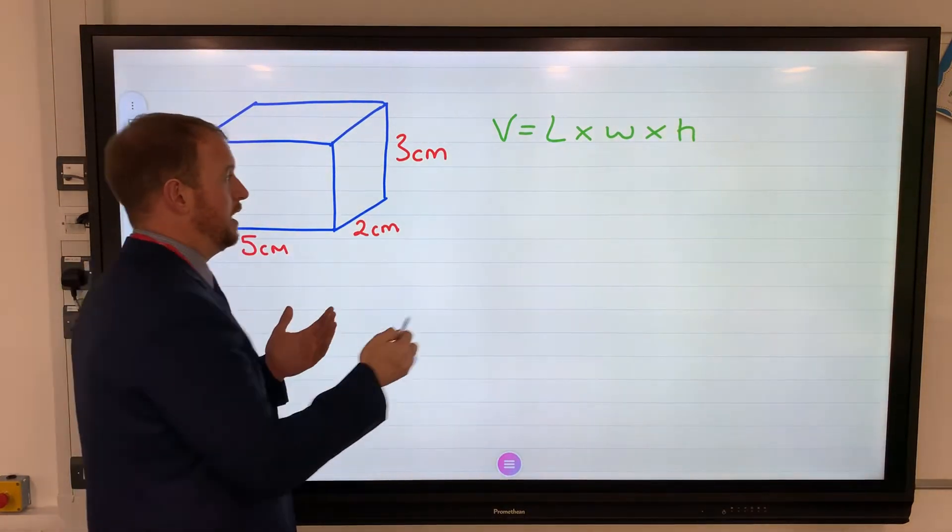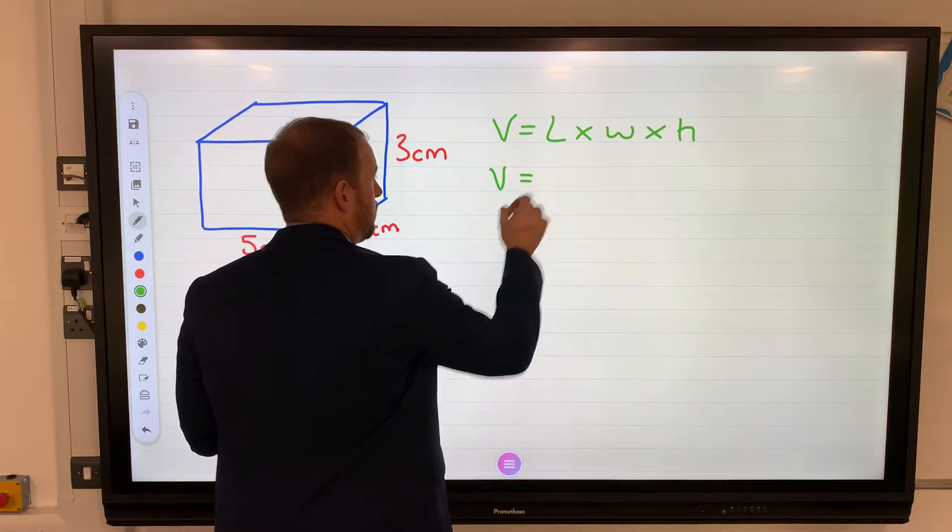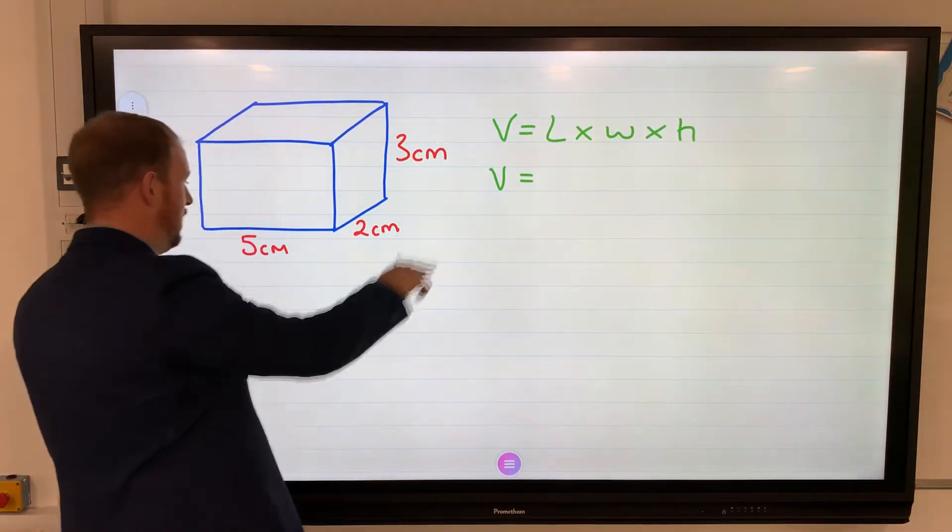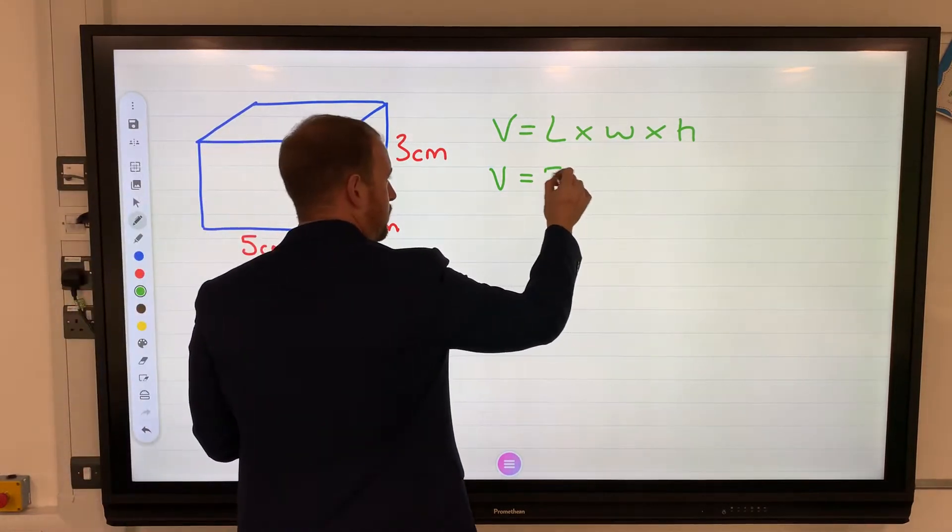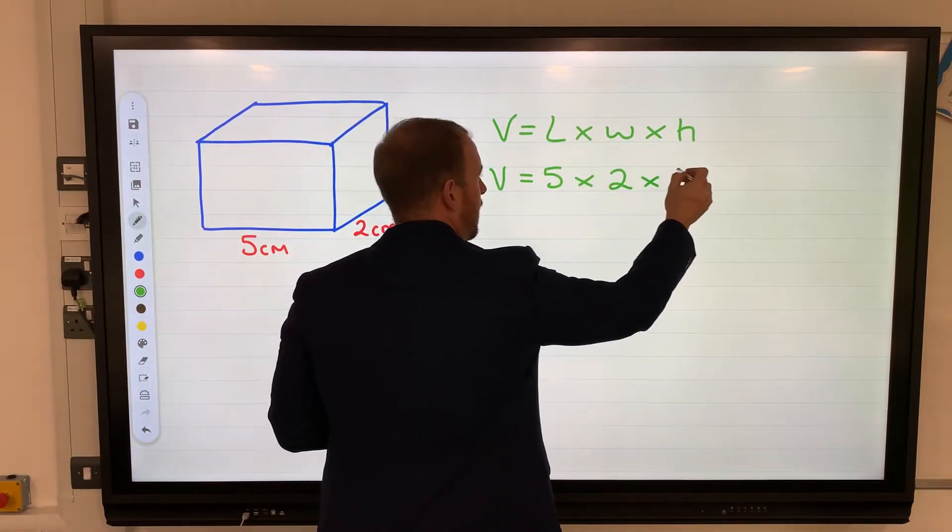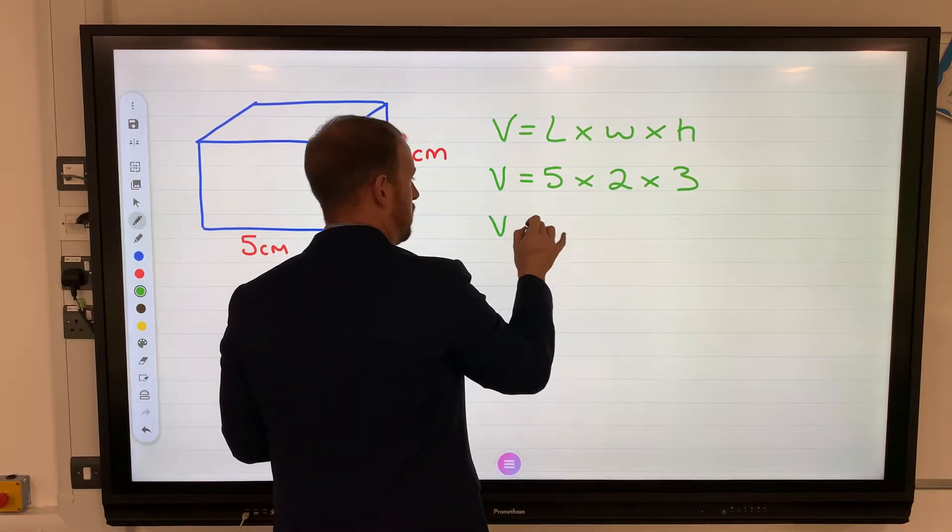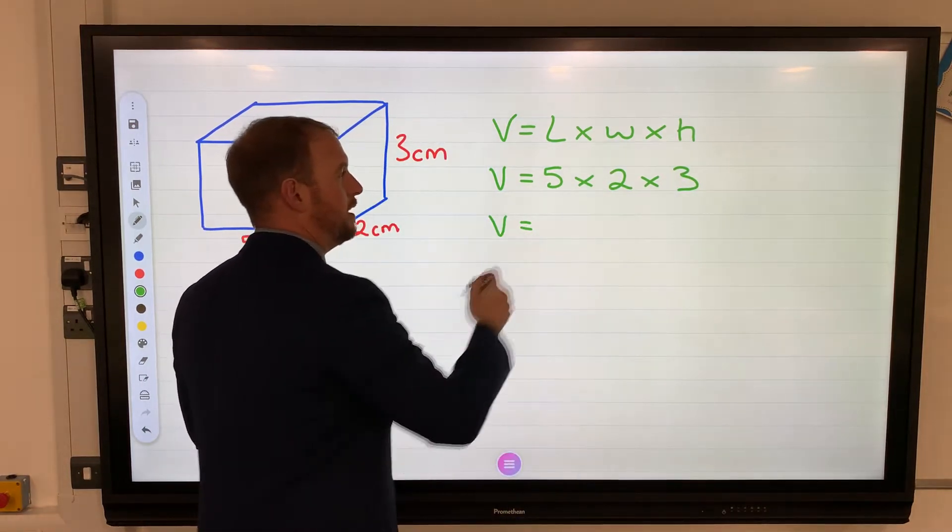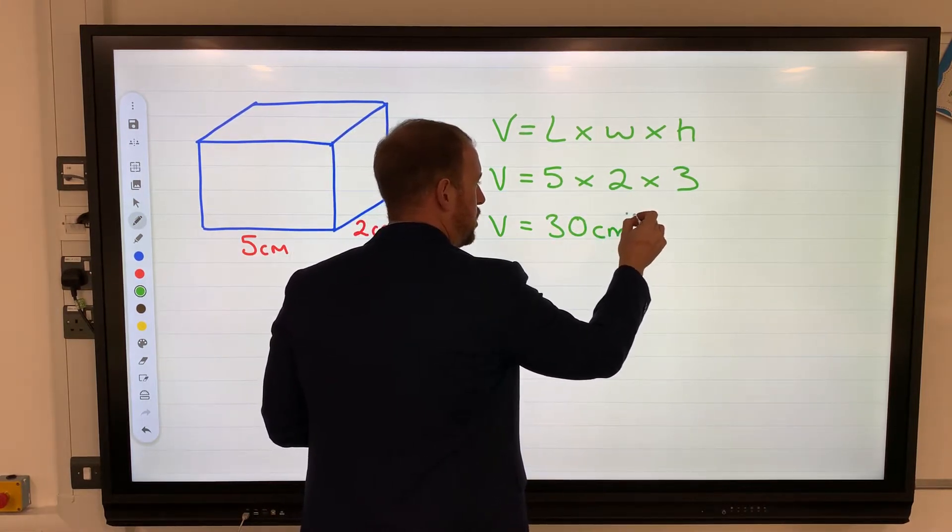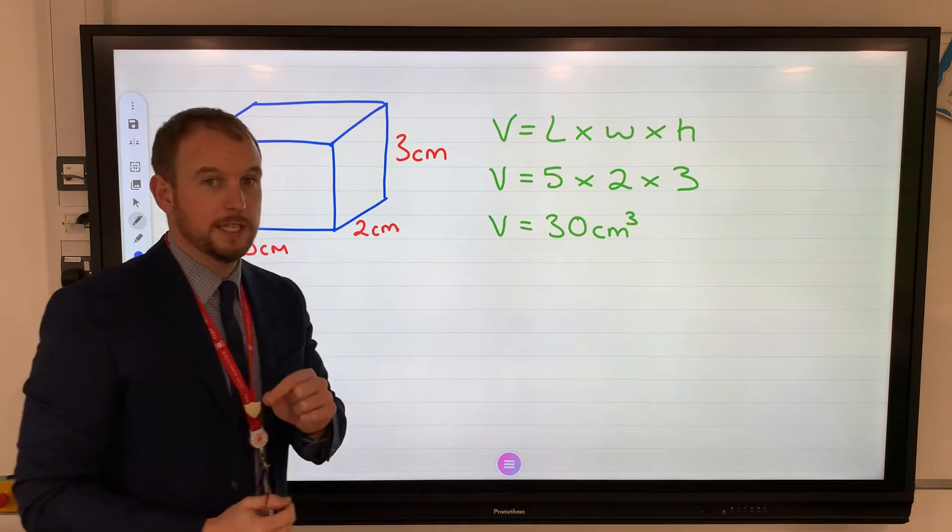So these have volume. Now it's substitution. Length is 5, width is 2, height is 3. 5 times 2 is 10, 10 times 3 is 30 centimeters cubed. The little 3 this time, it is three dimensional.